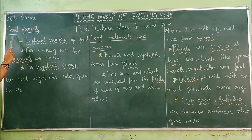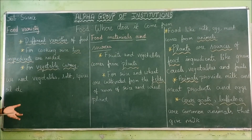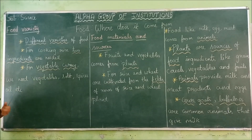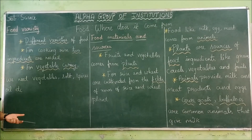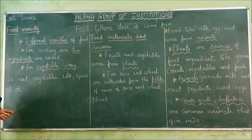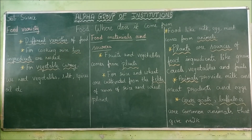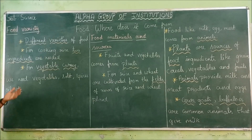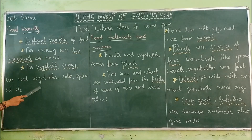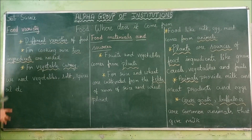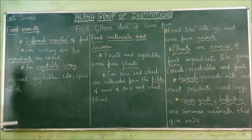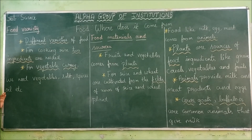First we are going to see about food variety. For example, you have rice, different types of curries, vegetable curry, chicken curry — there are many types of dishes. To cook rice, what ingredients are needed? We need water and rice — just two ingredients. For vegetable curry we need vegetables, salt, spices, and oil. In each recipe the number of ingredients changes.